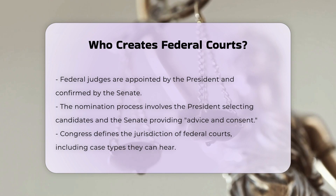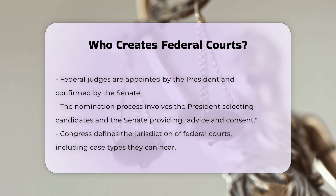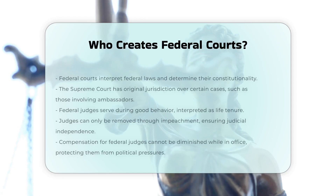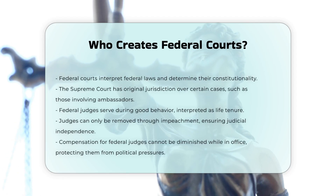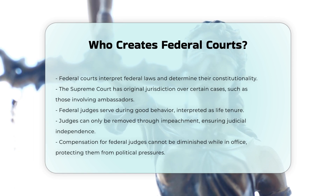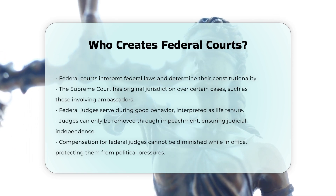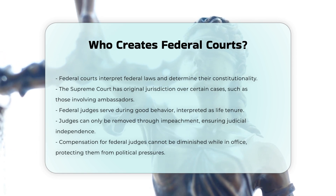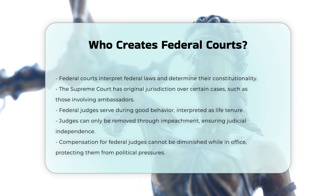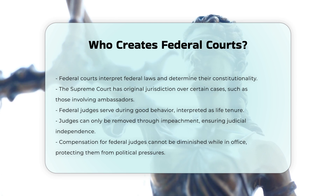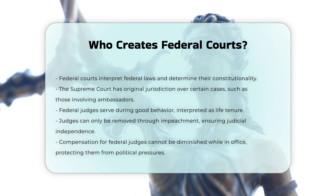Jurisdiction and powers. Congress also determines the jurisdiction of the federal courts, including the types of cases they can hear. Federal courts have the sole power to interpret federal laws, determine their constitutionality, and apply them to individual cases. The Supreme Court has original jurisdiction over certain types of cases, such as those involving ambassadors and disputes between states.